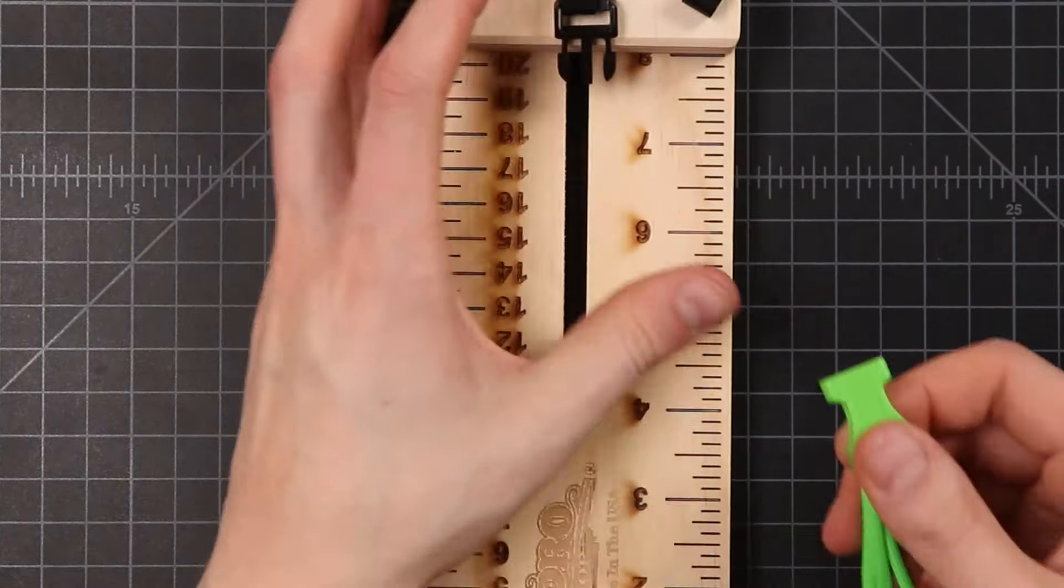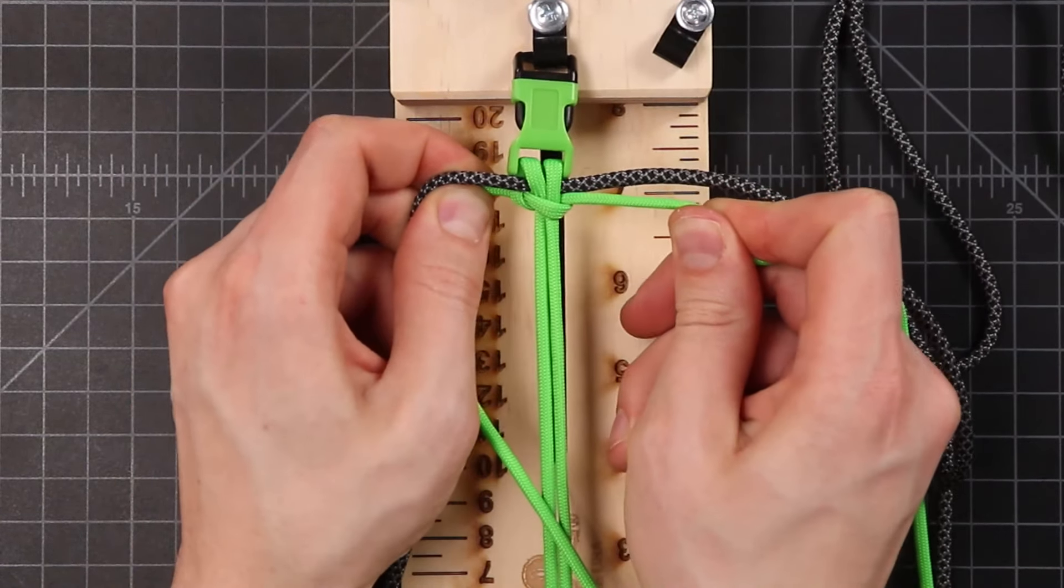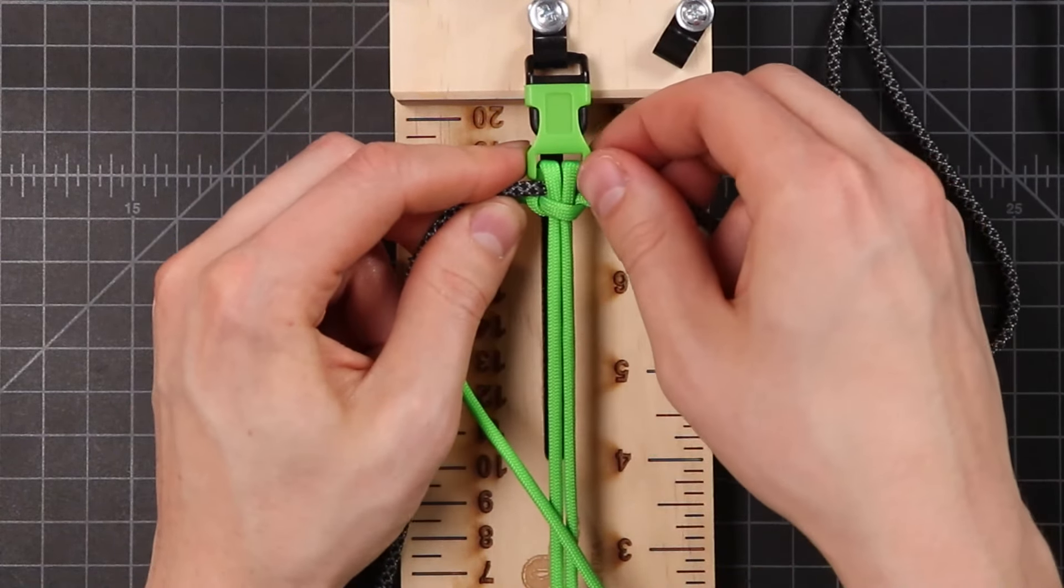So we'll do one knot first before we add in our second color. That's just one half of the cobra knot, like that. And before we tighten it down, we want to bring in that second color. So find the middle of that one as well, and run it through right above that knot that you just tied. Just like that. And then we can tighten it down, making sure that our center strands are nice and tight in there. There we go.